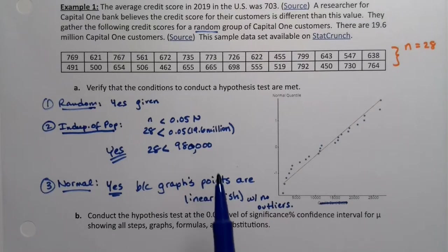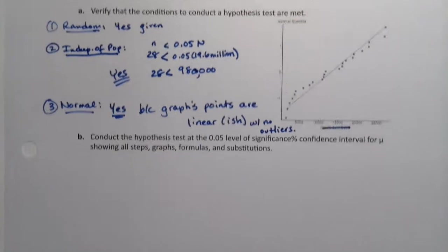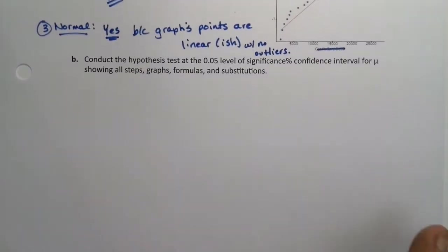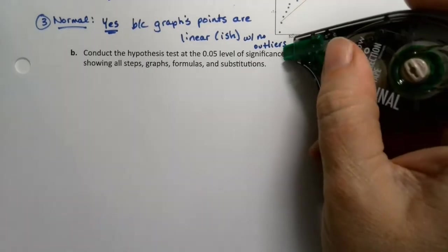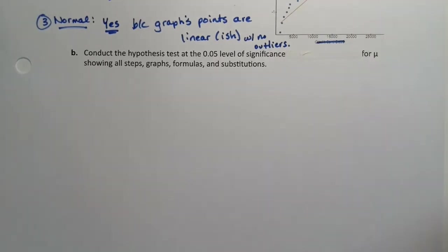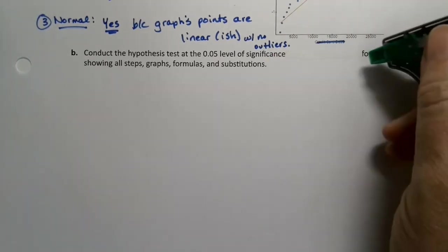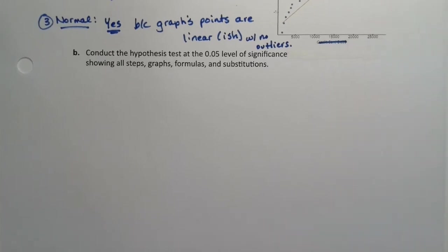So we proved that we can conduct this hypothesis test because we've met the three requirements. So of course, letter B is going to actually have us conduct said hypothesis test. And there's a typo in there. It's the hypothesis test from you showing all steps. I'll fix that for future as well. I must have been very tired when I did this page.